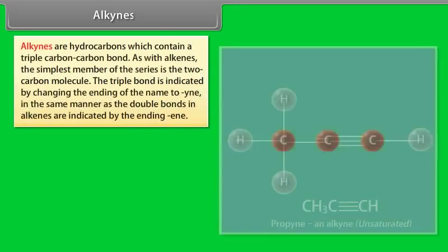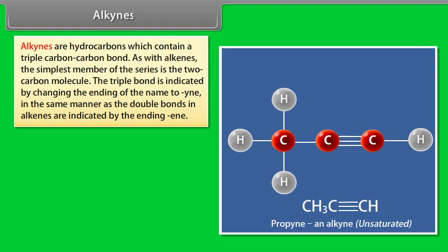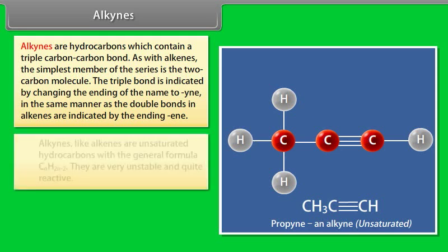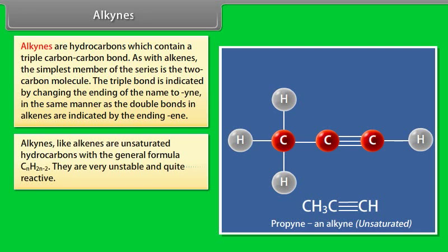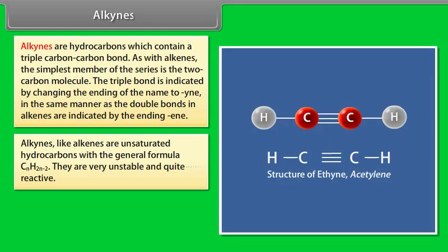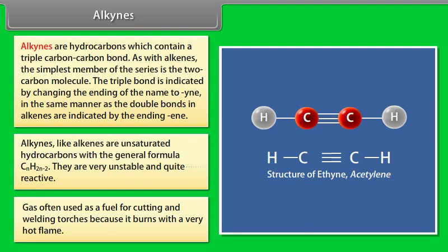Alkynes are hydrocarbons which contain a triple carbon-carbon bond. As with alkenes, the simplest member of the series is a 2-carbon molecule. The triple bond is indicated by changing the ending of the name to -yne, in the same manner as the double bonds in alkenes are indicated by the ending -ene. Alkynes, like alkenes, are unsaturated hydrocarbons with the general formula CnH(2n-2). They are very unstable and quite reactive. For example, ethyne, the simplest alkyne, more commonly known as acetylene, is a gas often used as a fuel for cutting and welding torches because it burns with a very hot flame.